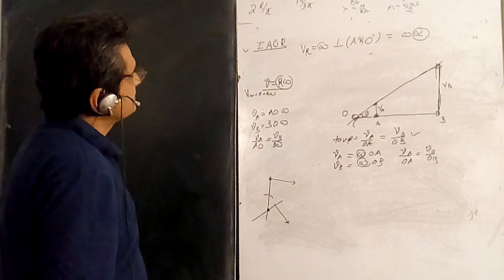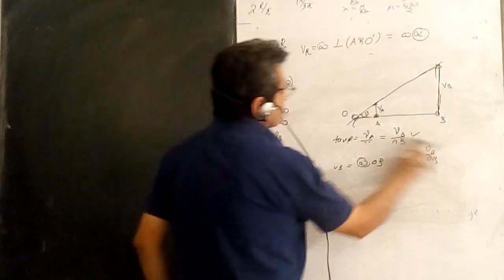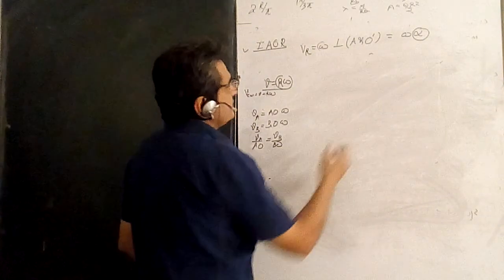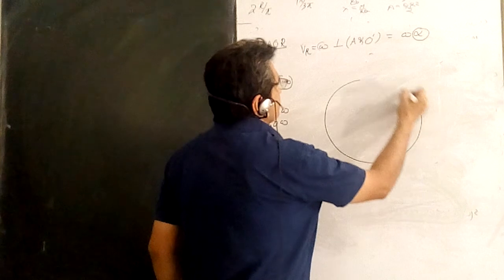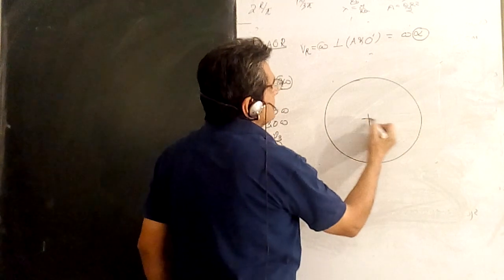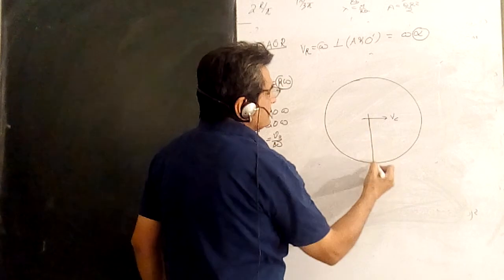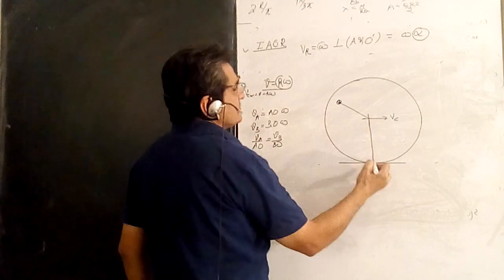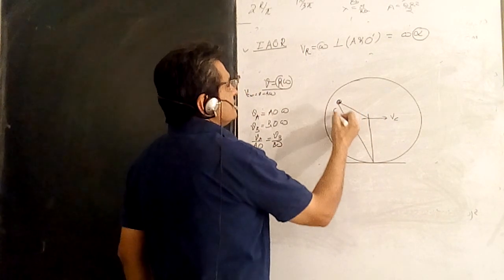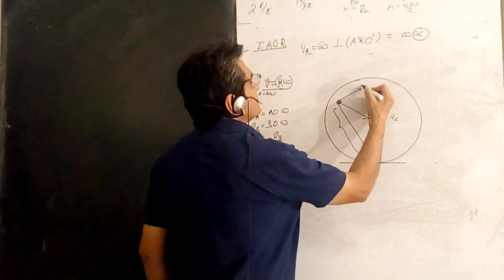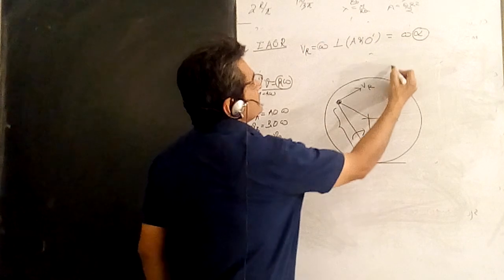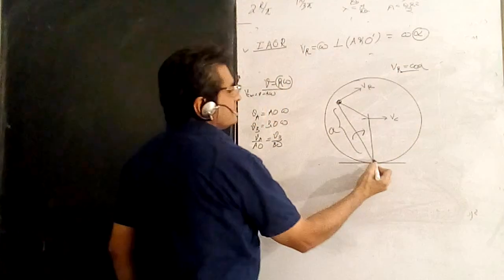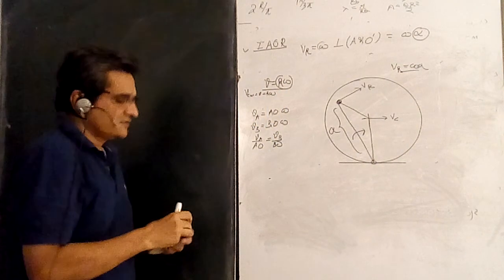These are the different methods for locating the instantaneous center. The main utility of the instantaneous center is in rotational and translational motion: for a rolling body, the point of contact is the instantaneous center, and if you know the distance alpha from any point to this center, the resultant velocity of that point is simply omega times alpha, directed perpendicular to the line joining the point to the instantaneous center.